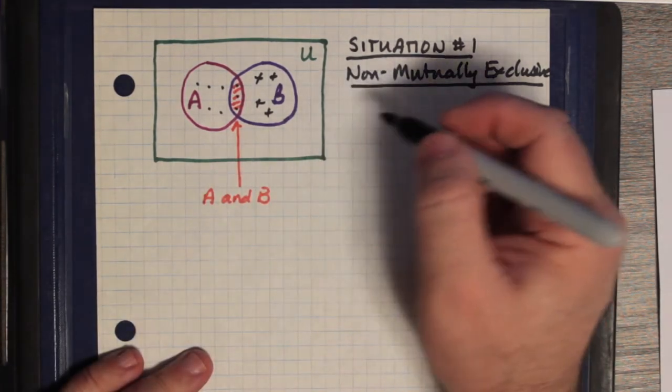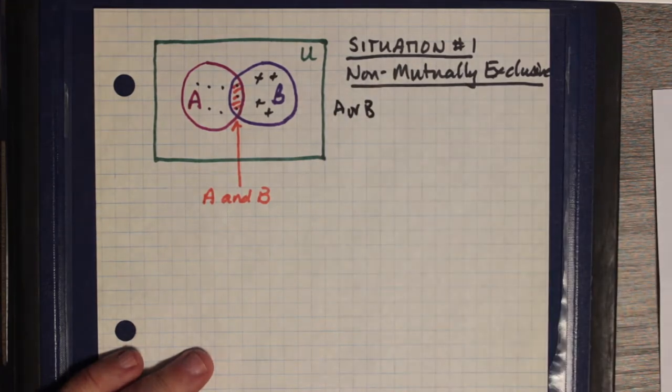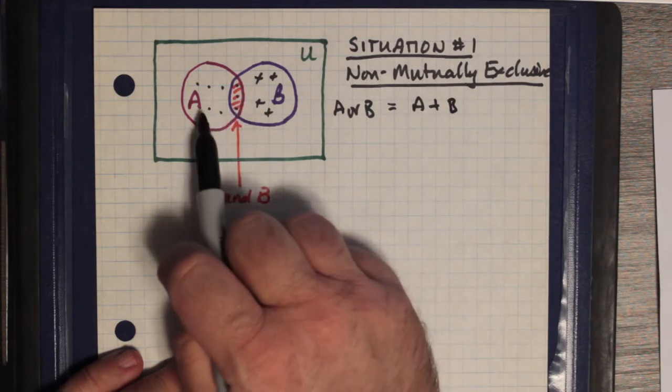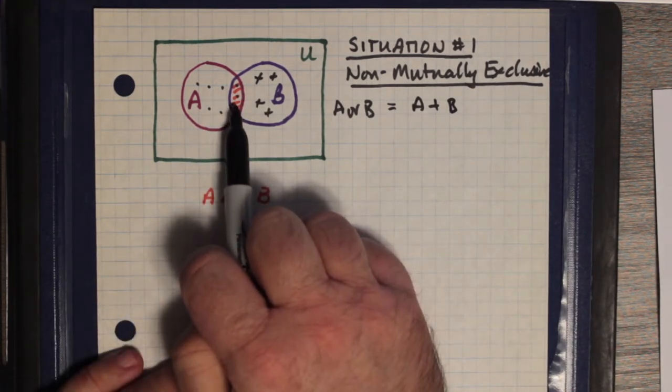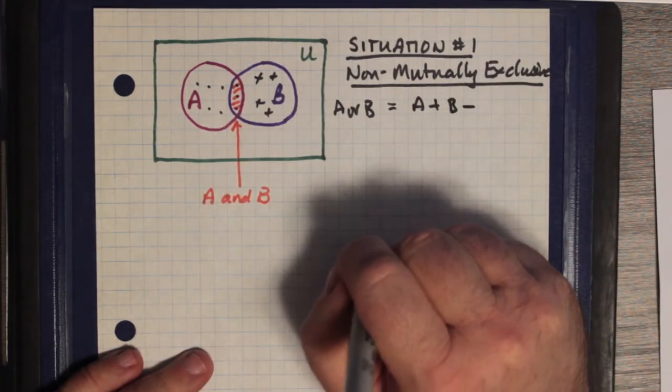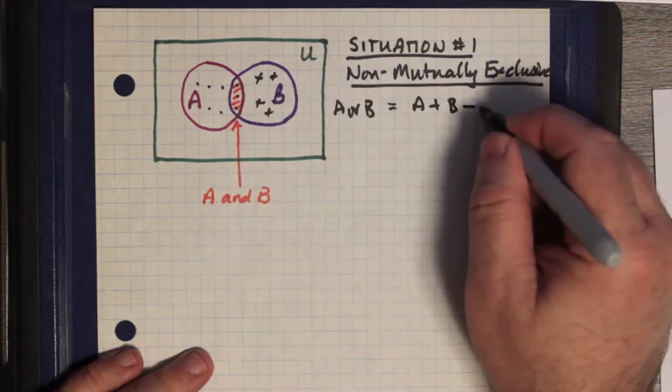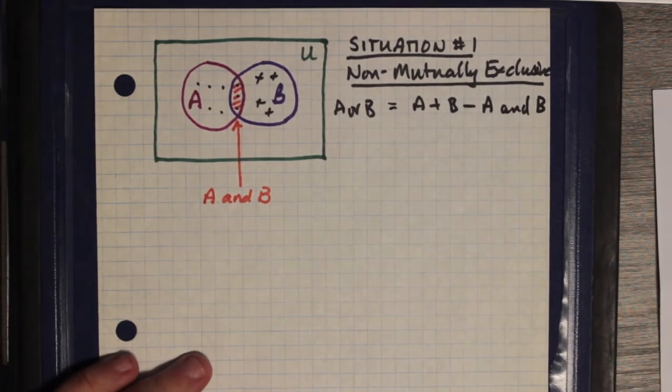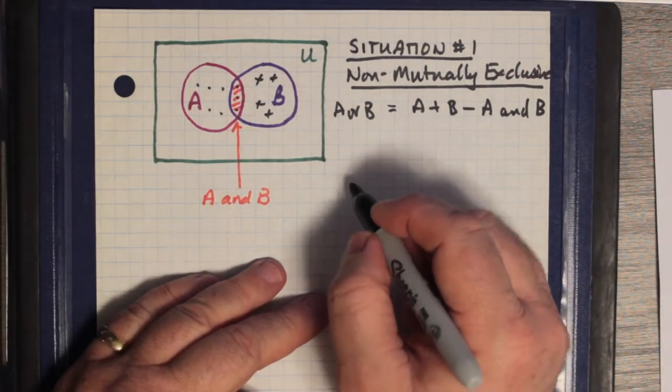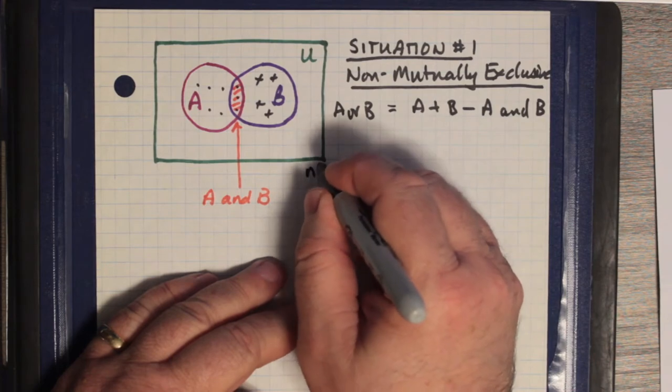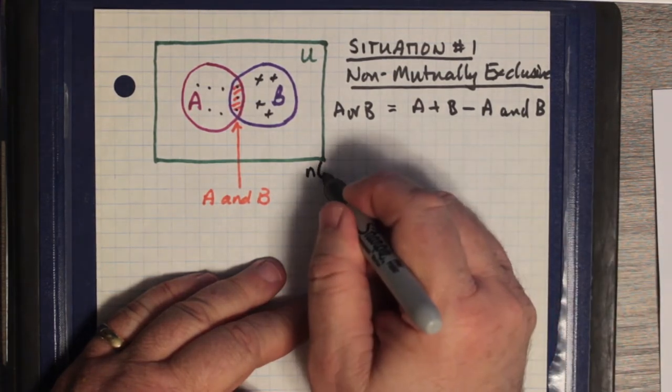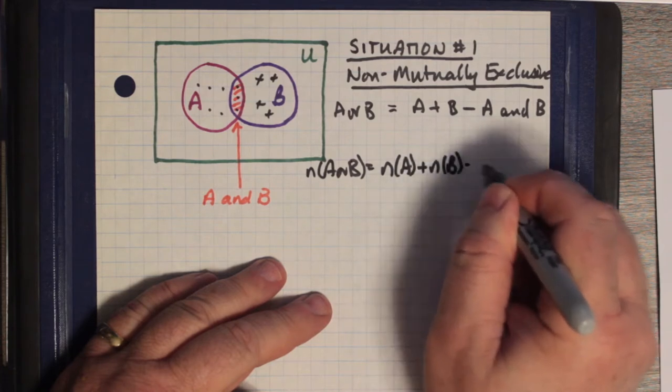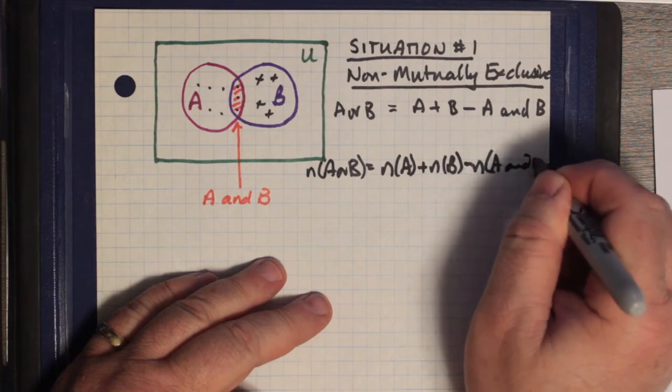So if we had to describe the set A or B, then we would have to say that this is equal to the set A plus the set B. But if we add the set A to the set B, we are actually double-counting the members in the intersection. So then we have to take away the overlap, which we call A and B. A and B has to be subtracted from A or B.